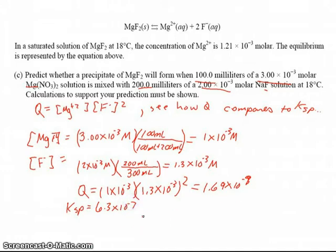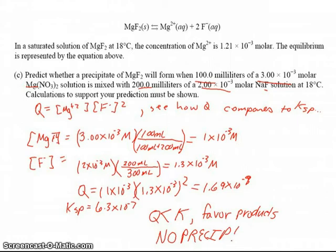So in this case, we can see that Q at 1.6 times 10 to the minus 9th is much less than K. So we haven't reached a point where the ion concentrations of these two species is high enough that it forces precipitate to form. We're still able to move forward. We haven't reached the equilibrium constant yet. So anytime Q is less than K, we favor products. And if we're favoring products, that means no precipitate will form at this point. If we continue to add additional magnesium to the system or fluoride to the system, then we can force a precipitate to form. But at our current location, we have no precipitate form.